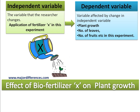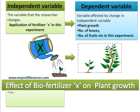The dependent variable is the variable that is affected by the change in the independent variable. The researcher thinks that the change in the independent variable will cause change in some other variable, which is called the dependent variable. Here, the dependent variables are plant growth, number of leaves, number of fruits, stem length, etc. So the researcher thinks that application of biofertilizer X will have some positive effect on these dependent variables.